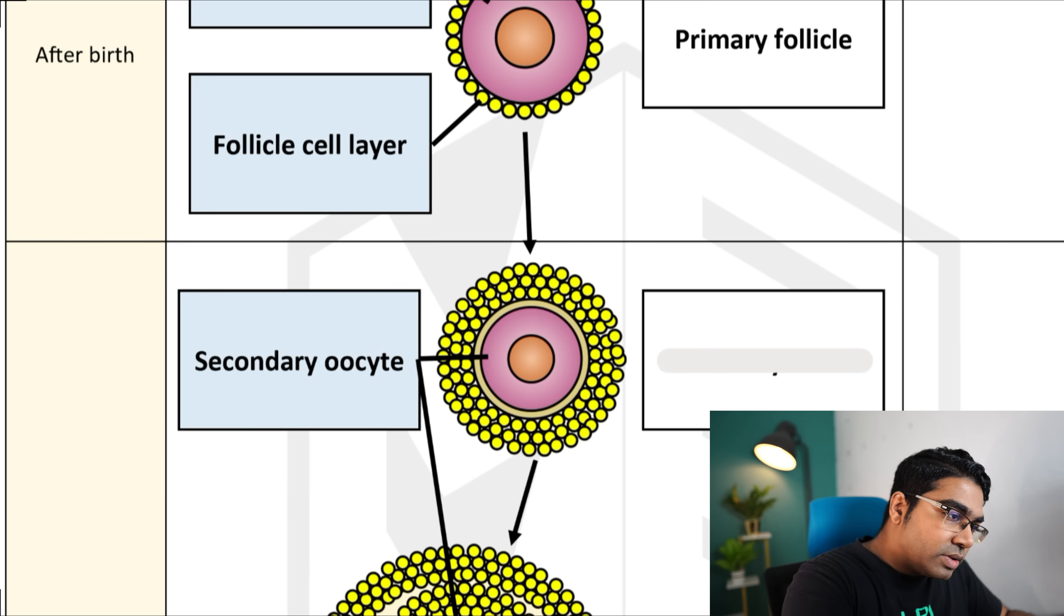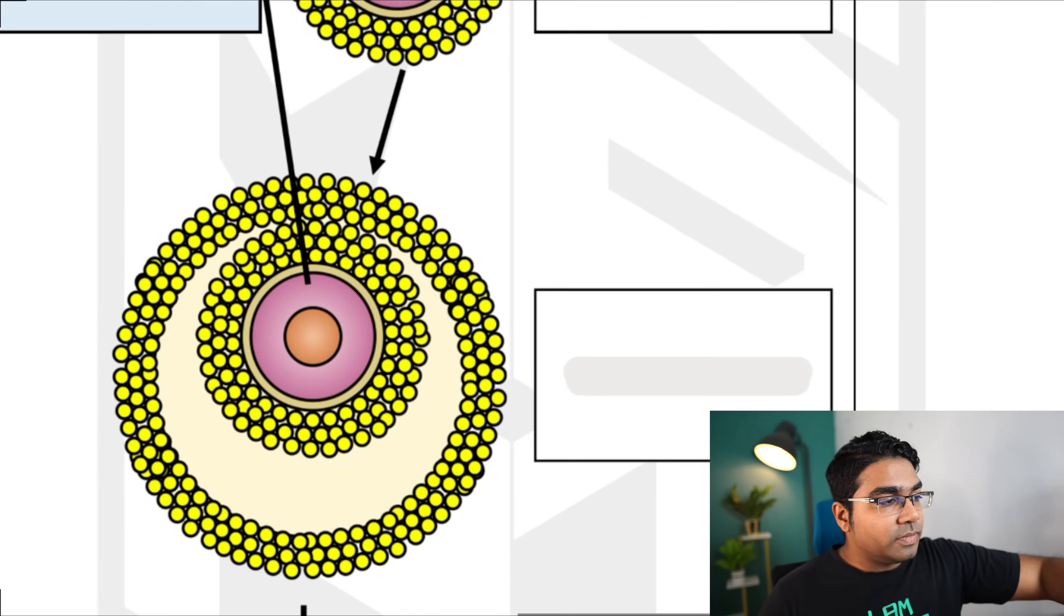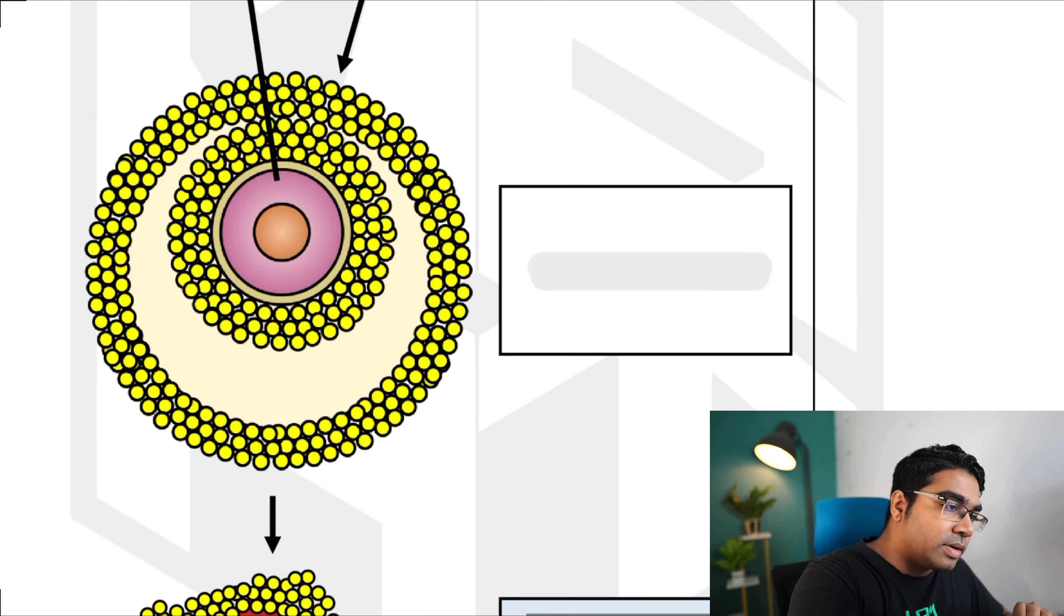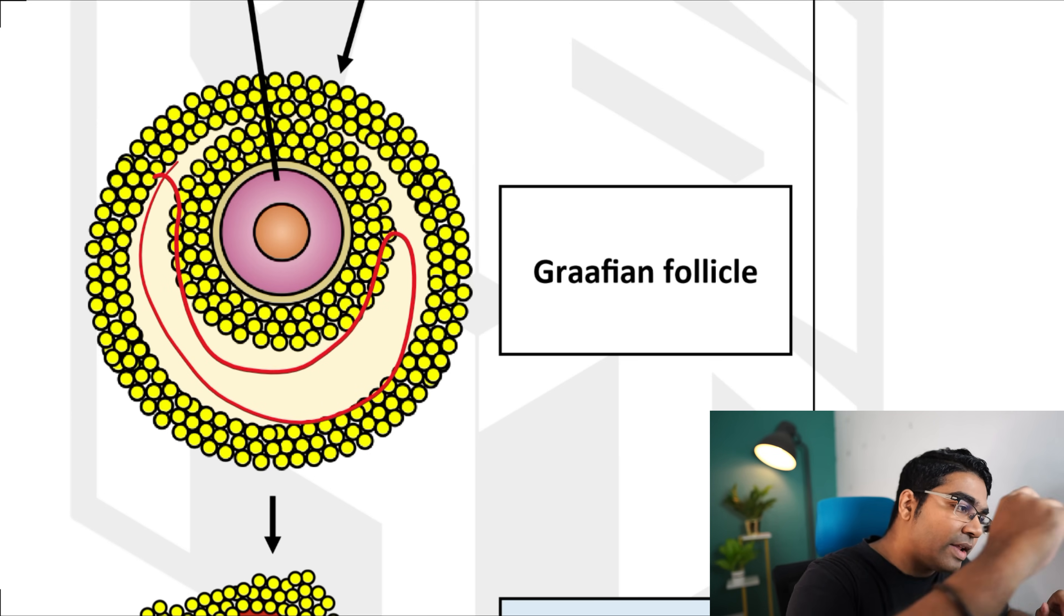The follicle cells are going to continue to grow and develop until it eventually becomes the graafian follicle. As you can see, the graafian follicle is much larger than the primary and secondary follicle. And you can see we have a region that is filled with liquid in between. This is actually known as the antrum.